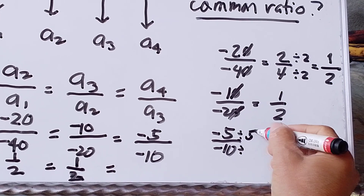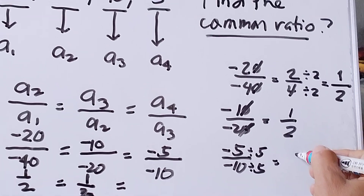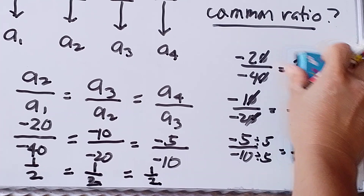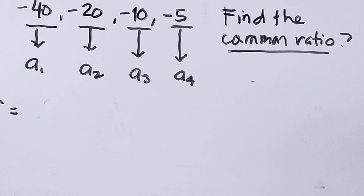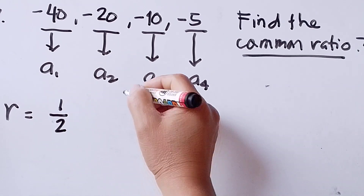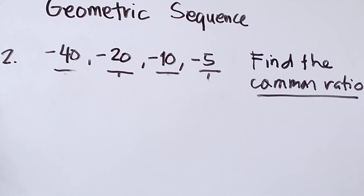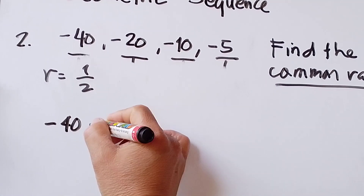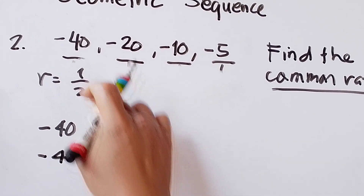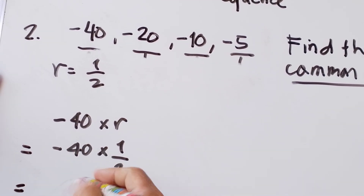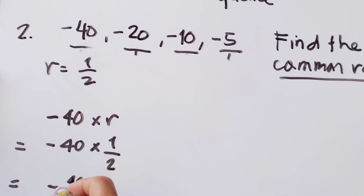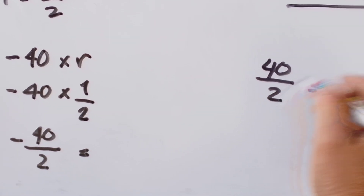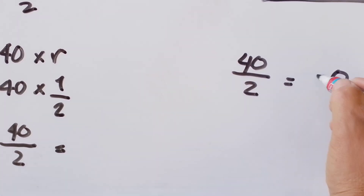Let's go to example number one. I have here 2, 6, 18, and 54. The question is: find the common ratio. To find the common ratio, we have r is equal to a sub 2 over a sub 1, which is equal to a sub 3 over a sub 2, and also a sub 4 over a sub 3. This is a sub 1, this is a sub 2, this is a sub 3, and this is a sub 4.